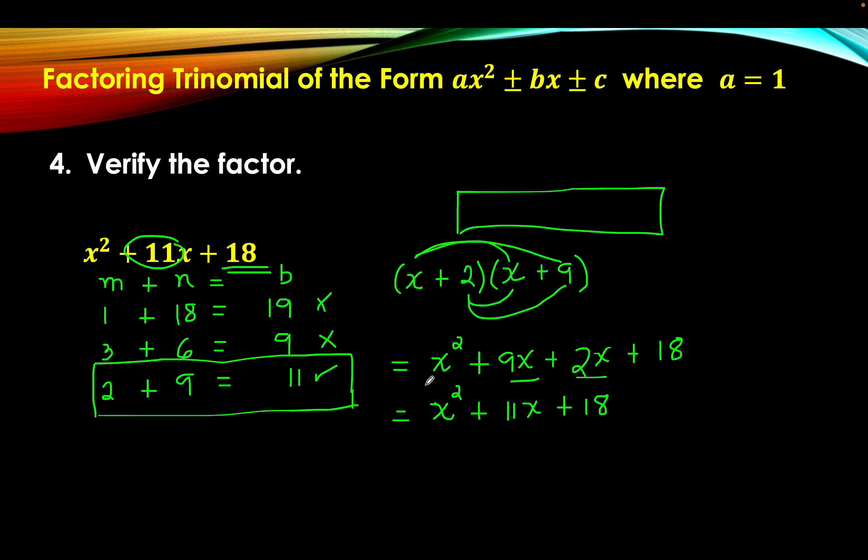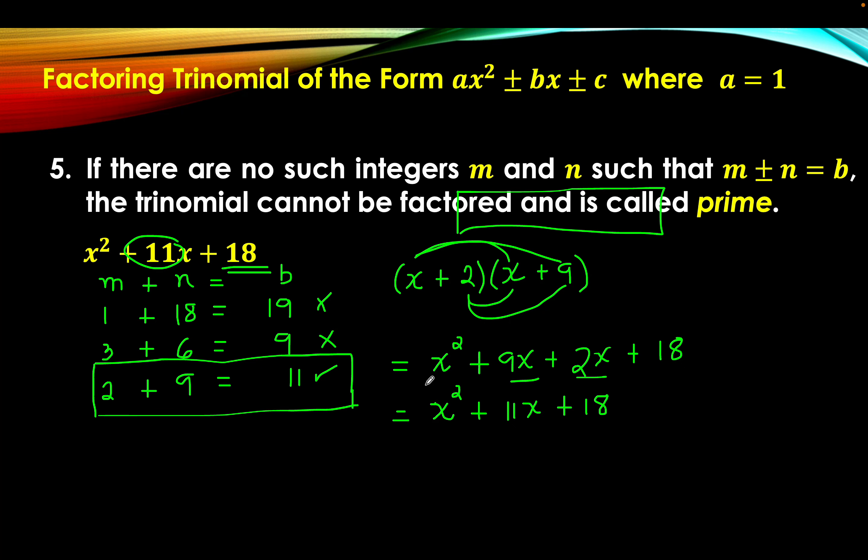So, let us not forget that after forming the factor, we have to check whether it satisfies the trinomial. We should also bear in mind that not all trinomials are factorable. In the event that there are no integers m and n such that m plus or minus n equals b, the trinomial cannot be factored and it is said to be a prime or prime polynomial.